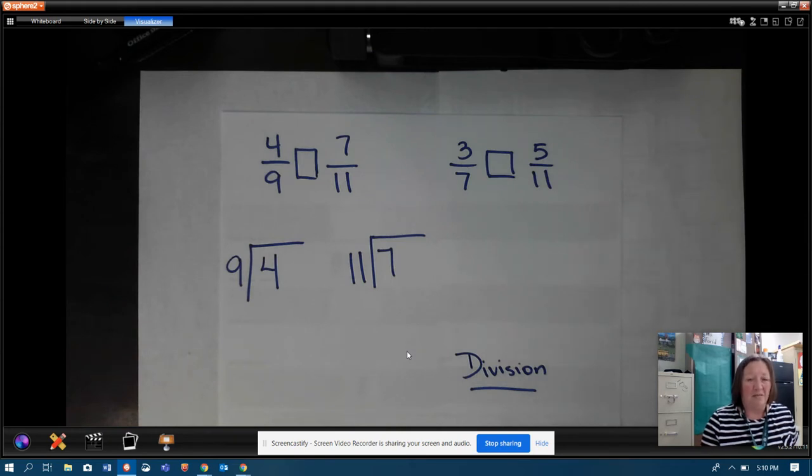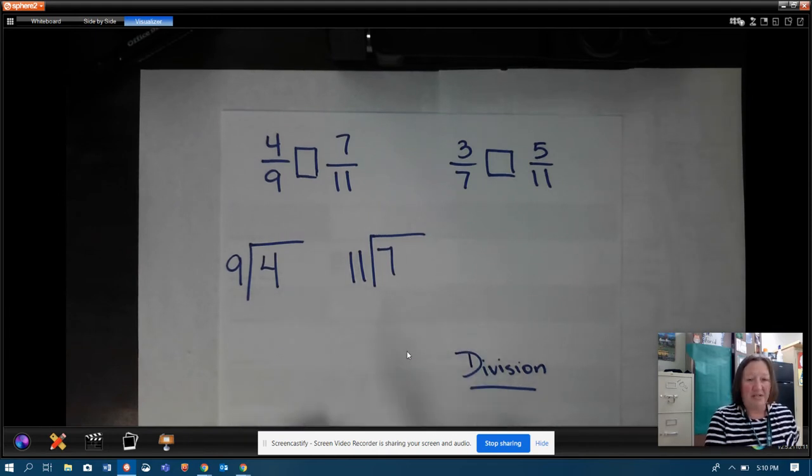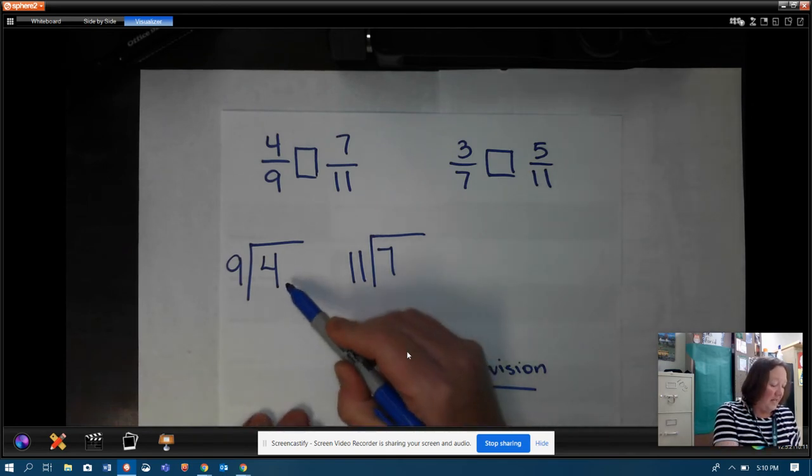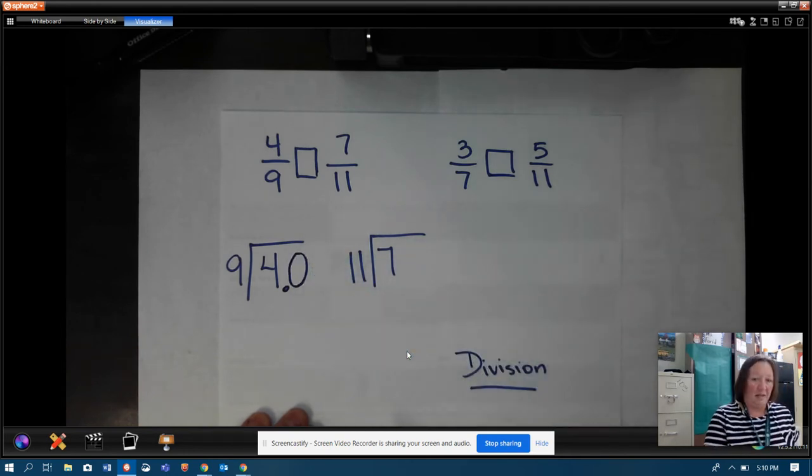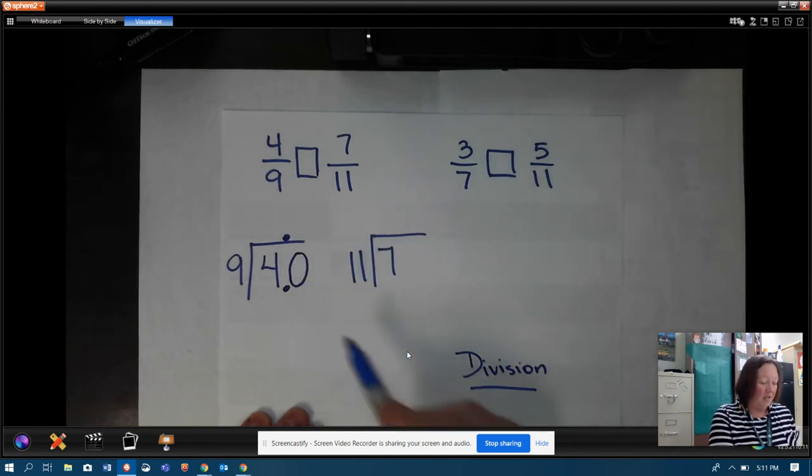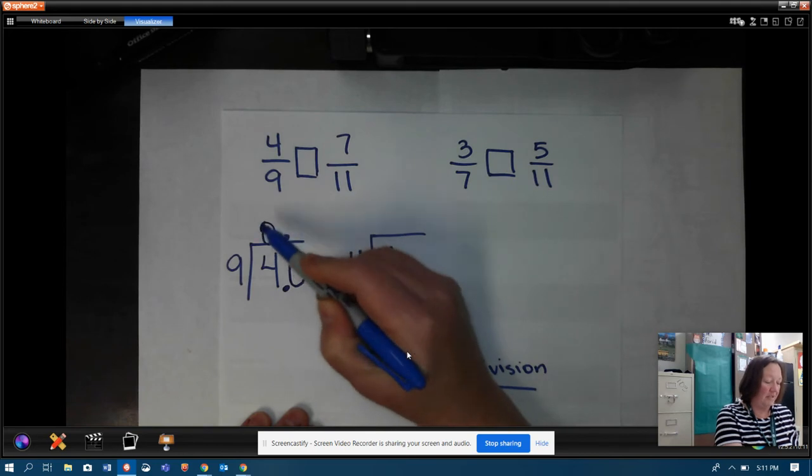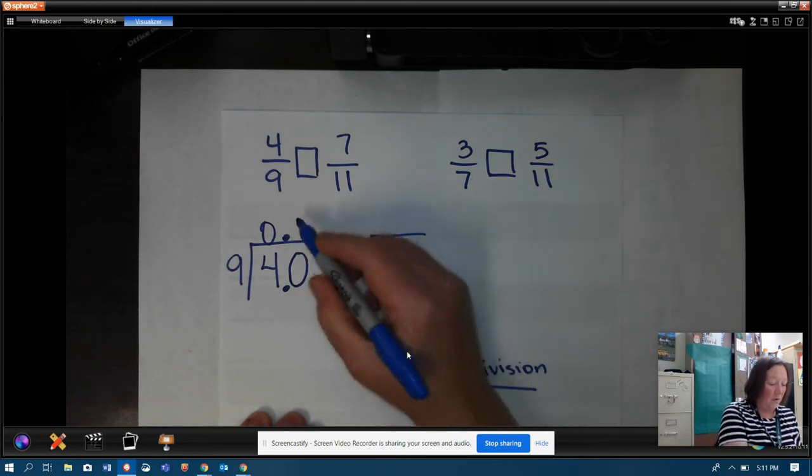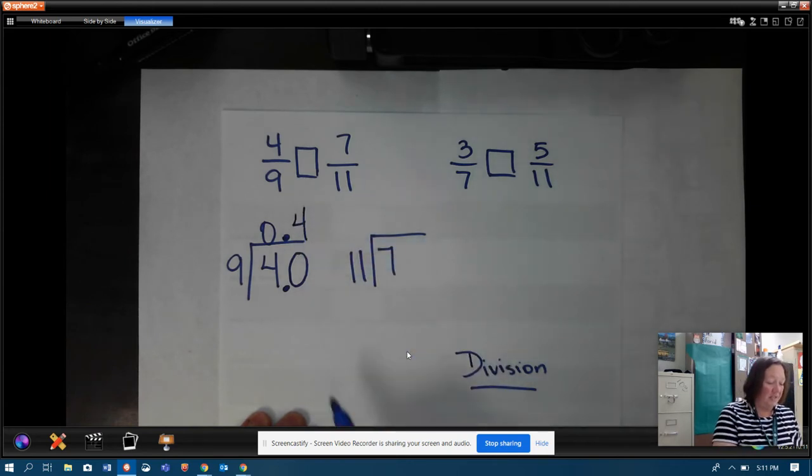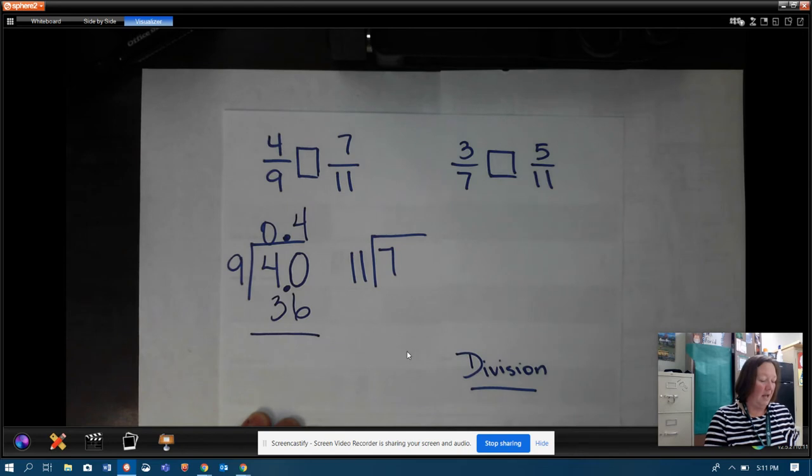Okay, now we did this when we were dividing with decimals. We said nine goes into four. Well, it doesn't go into four, right? So we needed to put the decimal point there, put a zero behind, and then bring that decimal point up and now keep working. So how many times does nine go into forty? Well, I know nine times four is thirty-six.